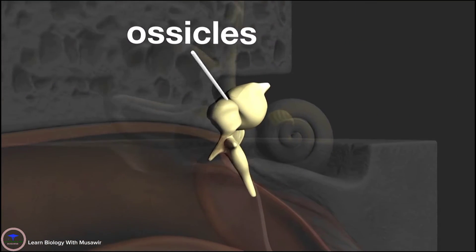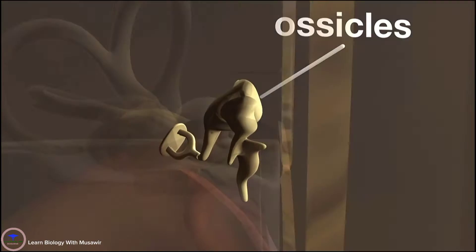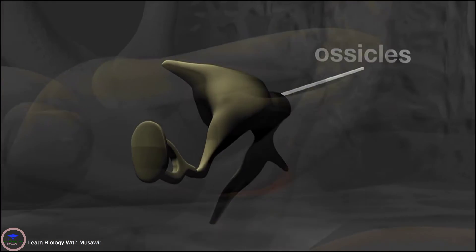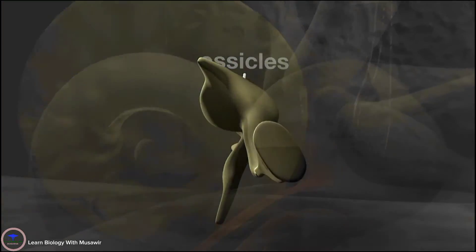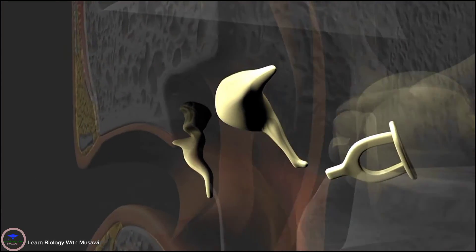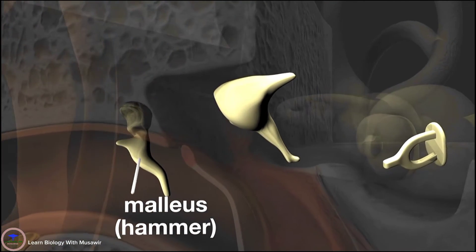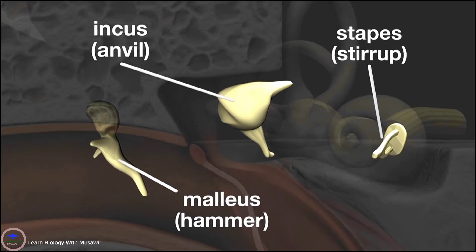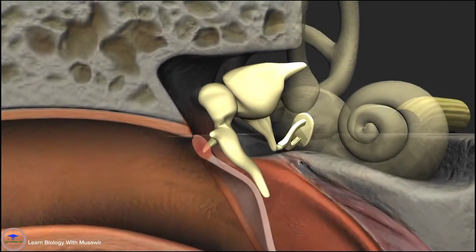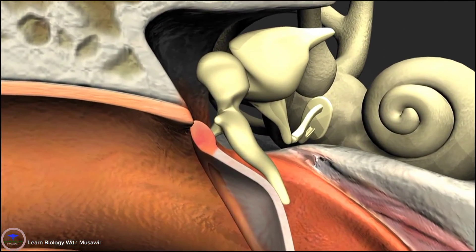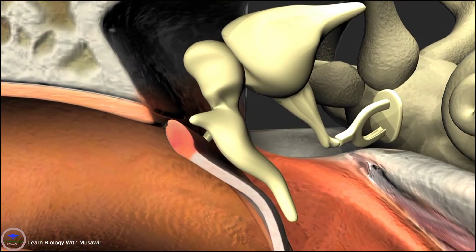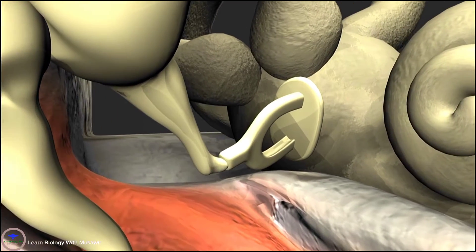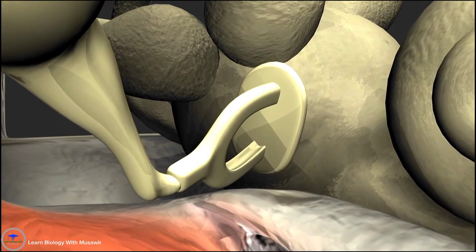These are connected in a chain across the middle ear from the tympanic membrane to the entrance of the cochlea called the oval window. The ossicles are called the malleus, the hammer, the incus, the anvil, and the stapes, the stirrup. The handle of the malleus is attached to the tympanic membrane, and the base of the stapes, known as the stapes footplate, sits loosely in the oval window of the cochlea, held in place by the annular ligament.